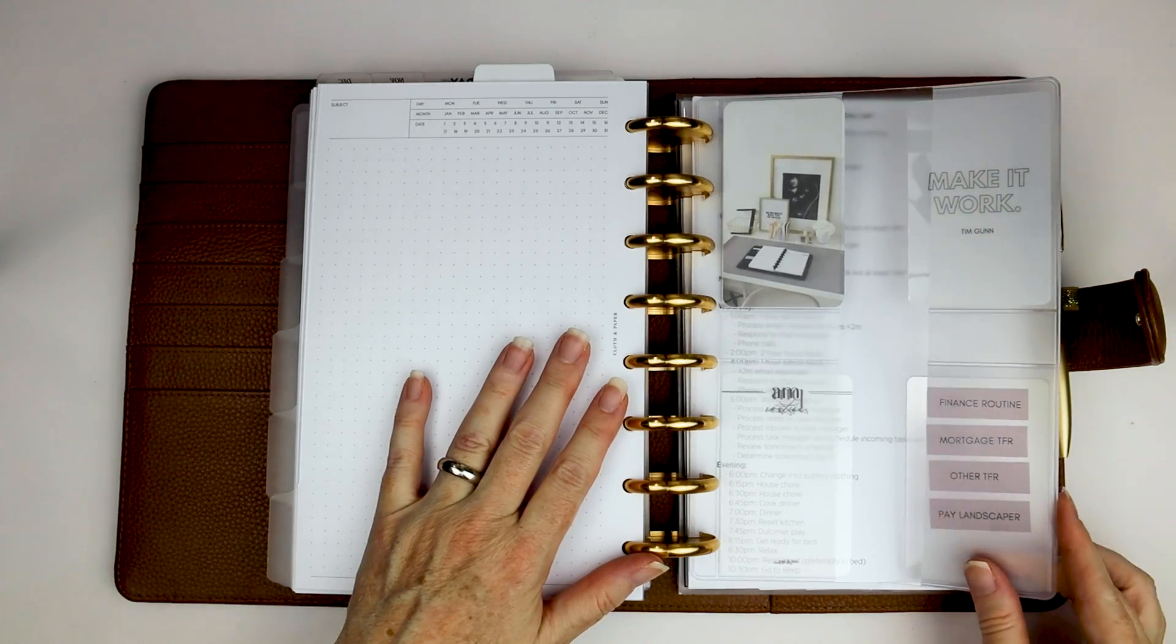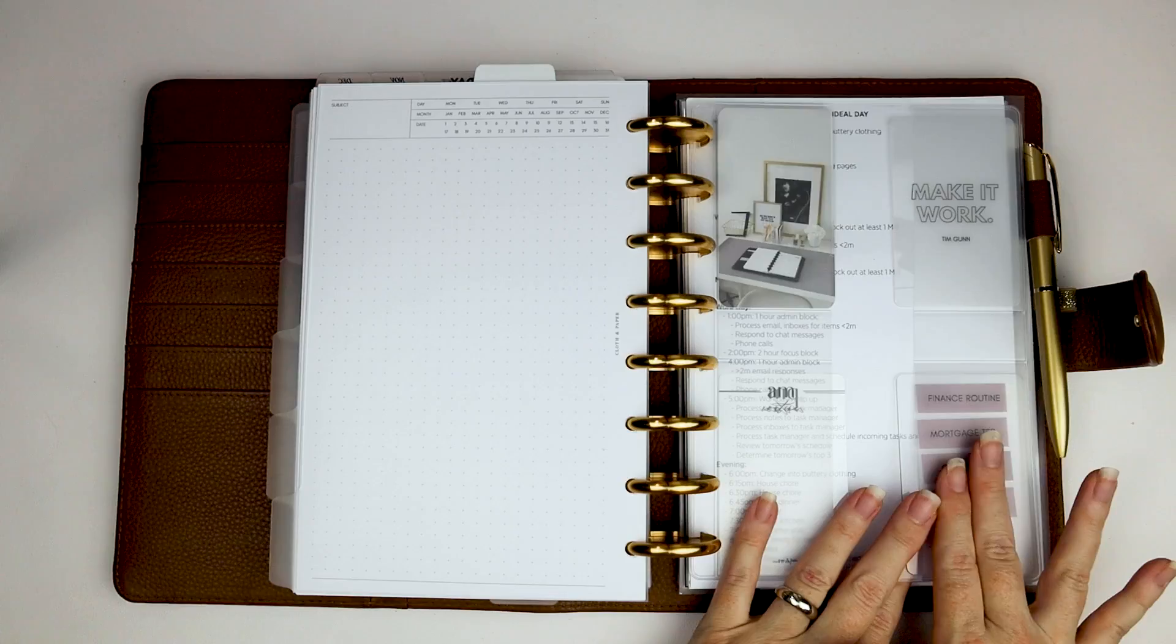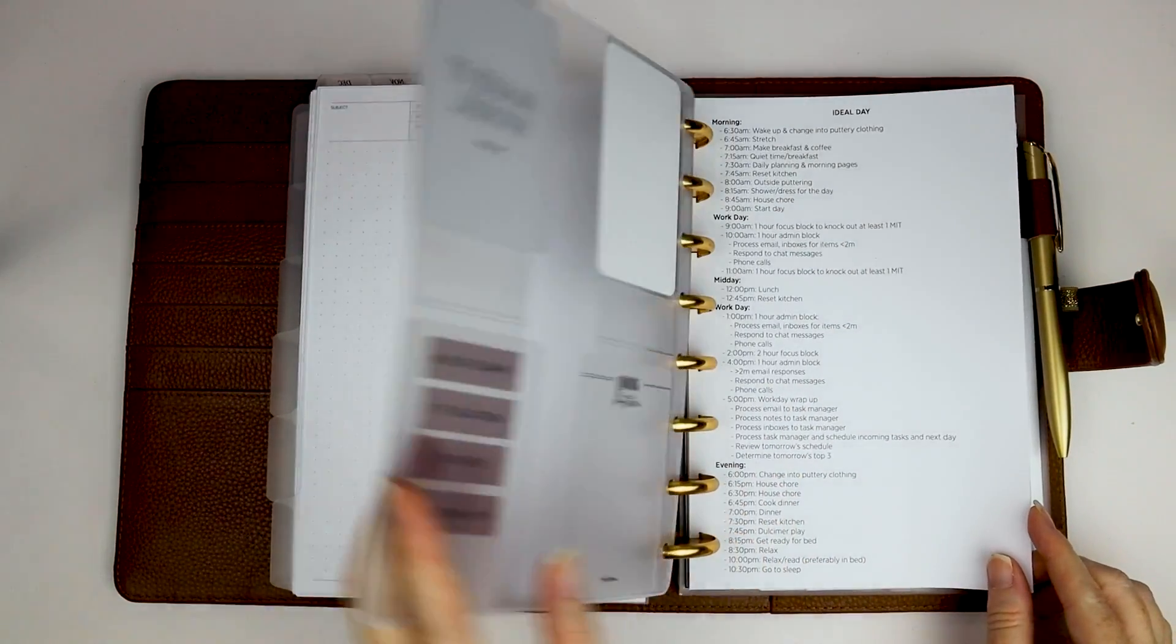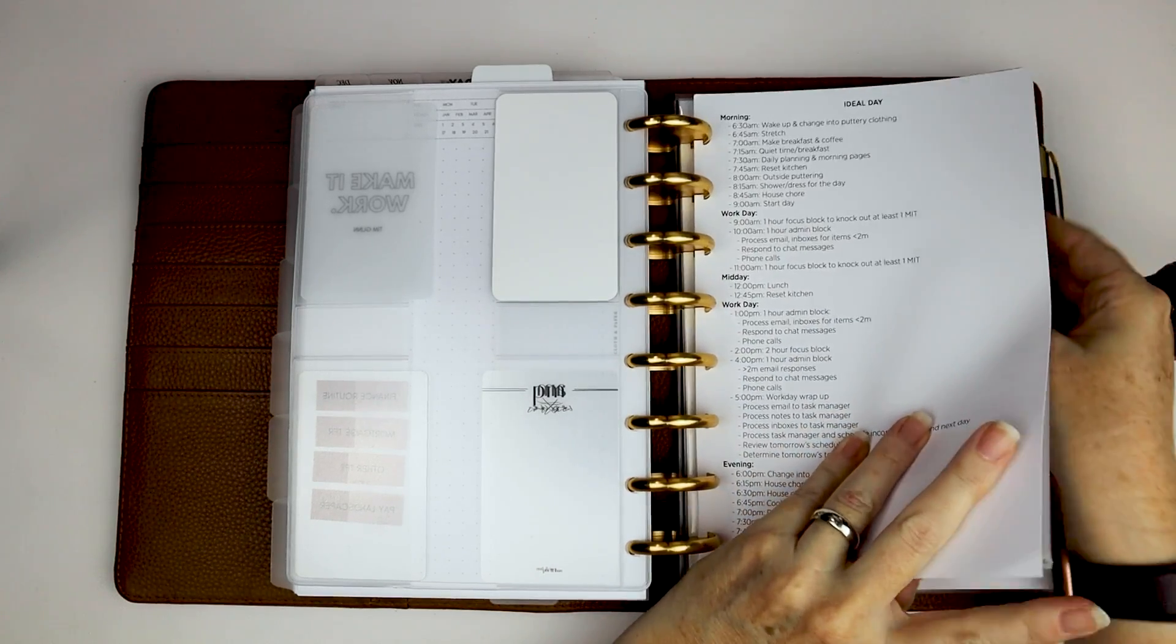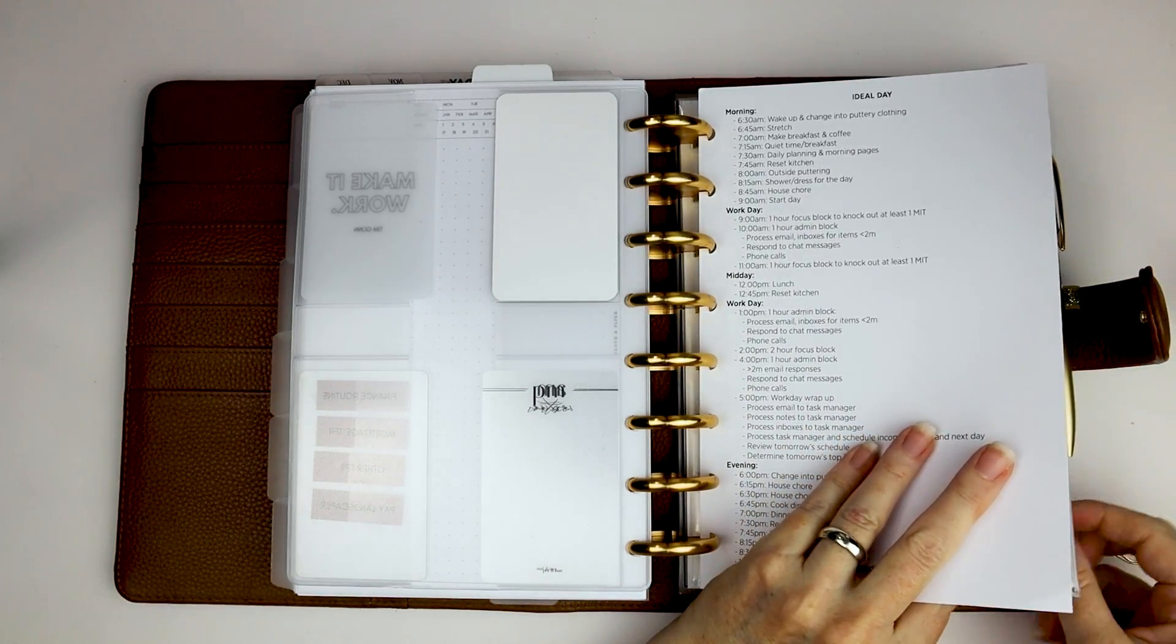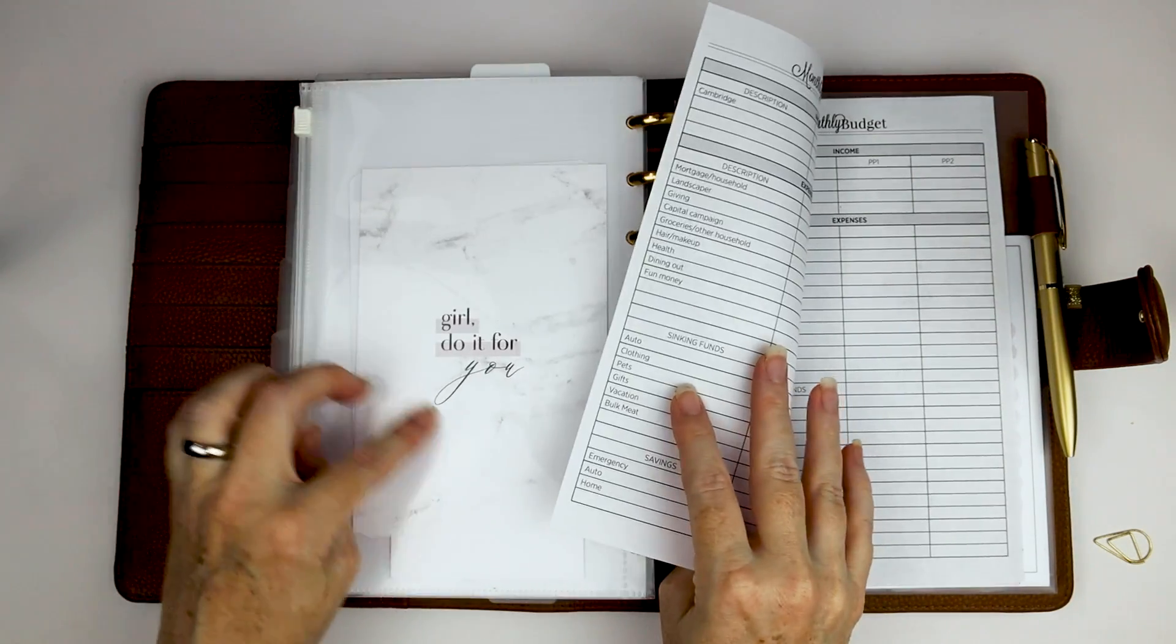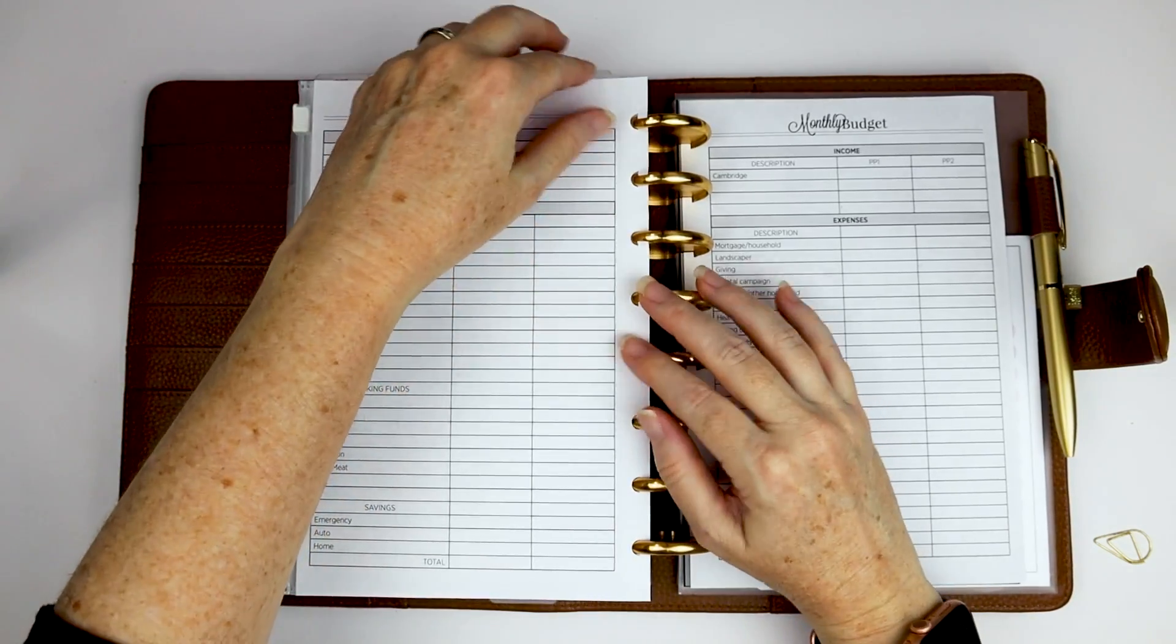This is my reference section, so I have a couple more things in here. So I have, like, my budget, finance, routine sorts of page flags back here. I have kind of my ideal day laid out. And let me take this off. This is just, like, a zipper envelope here that has some random stuff in it. And then I have my budget pages back here.